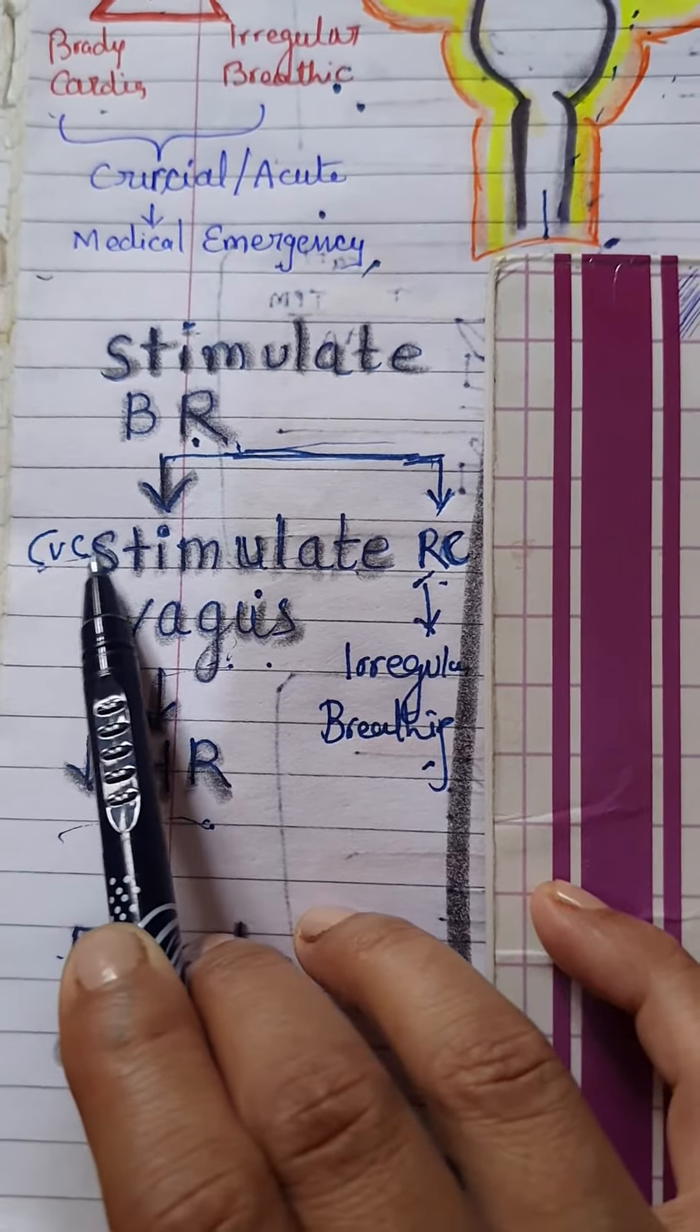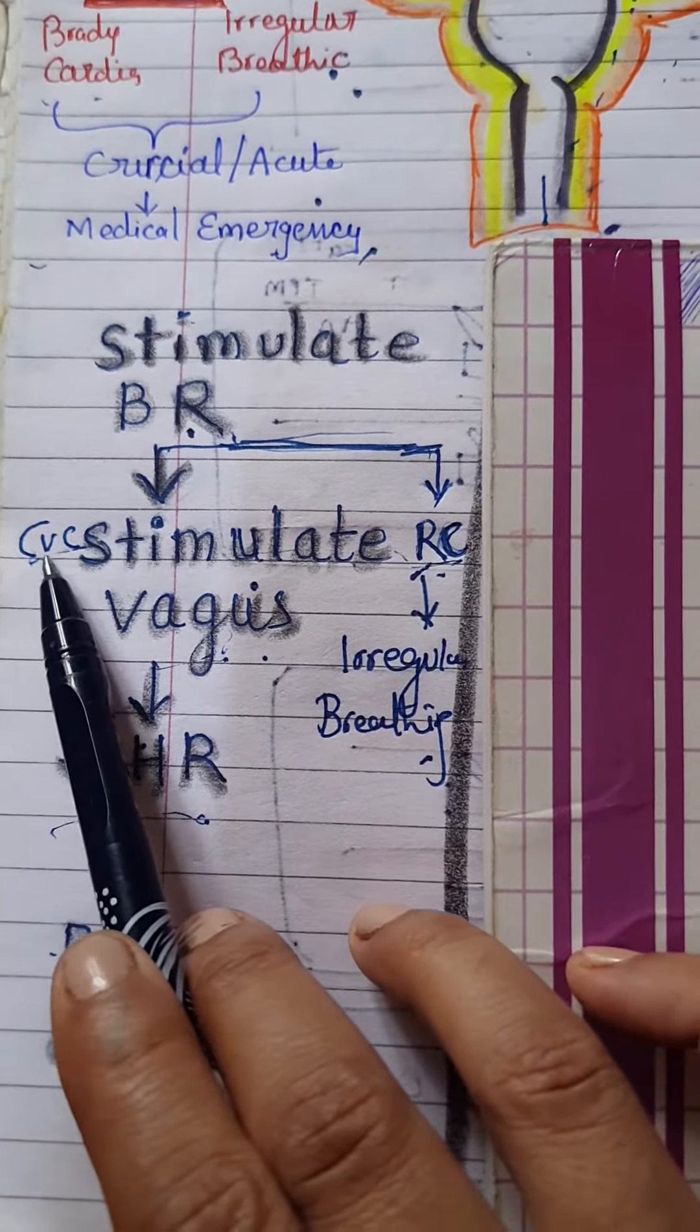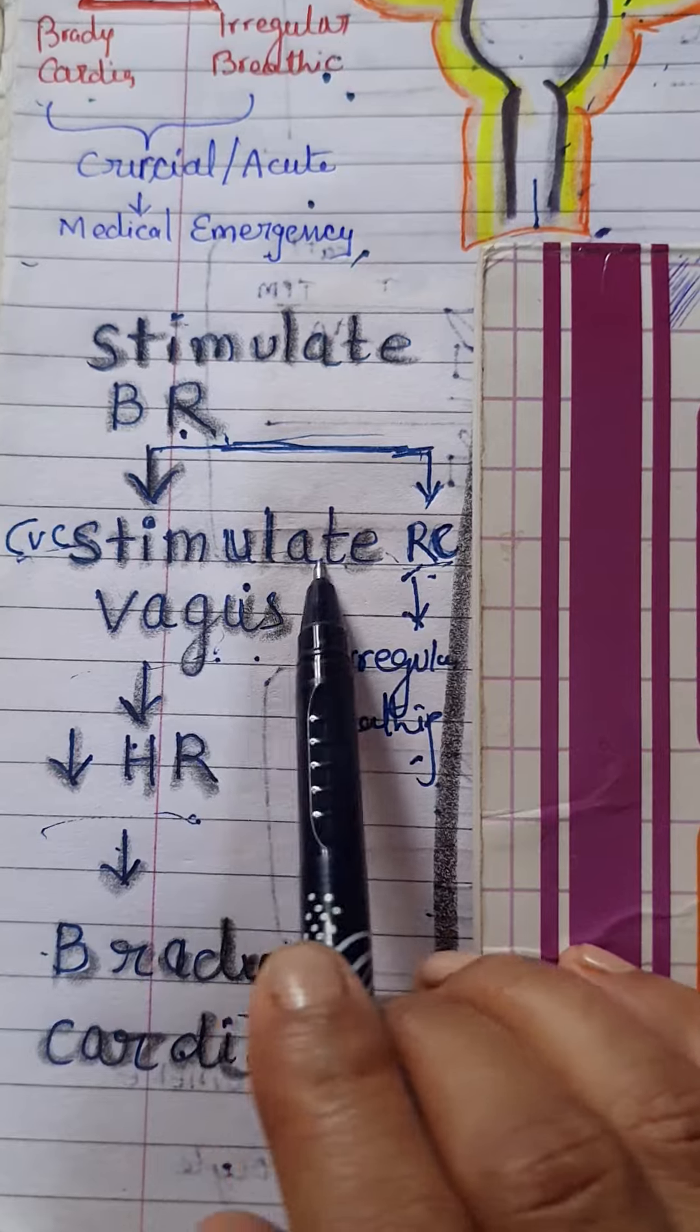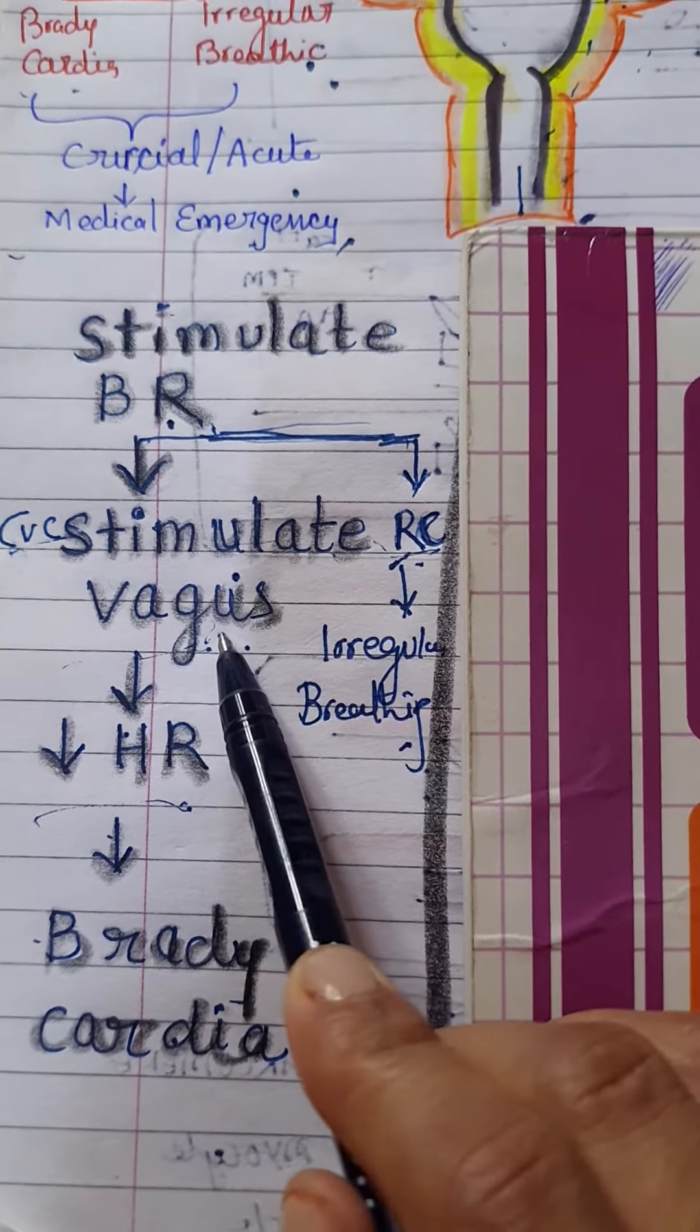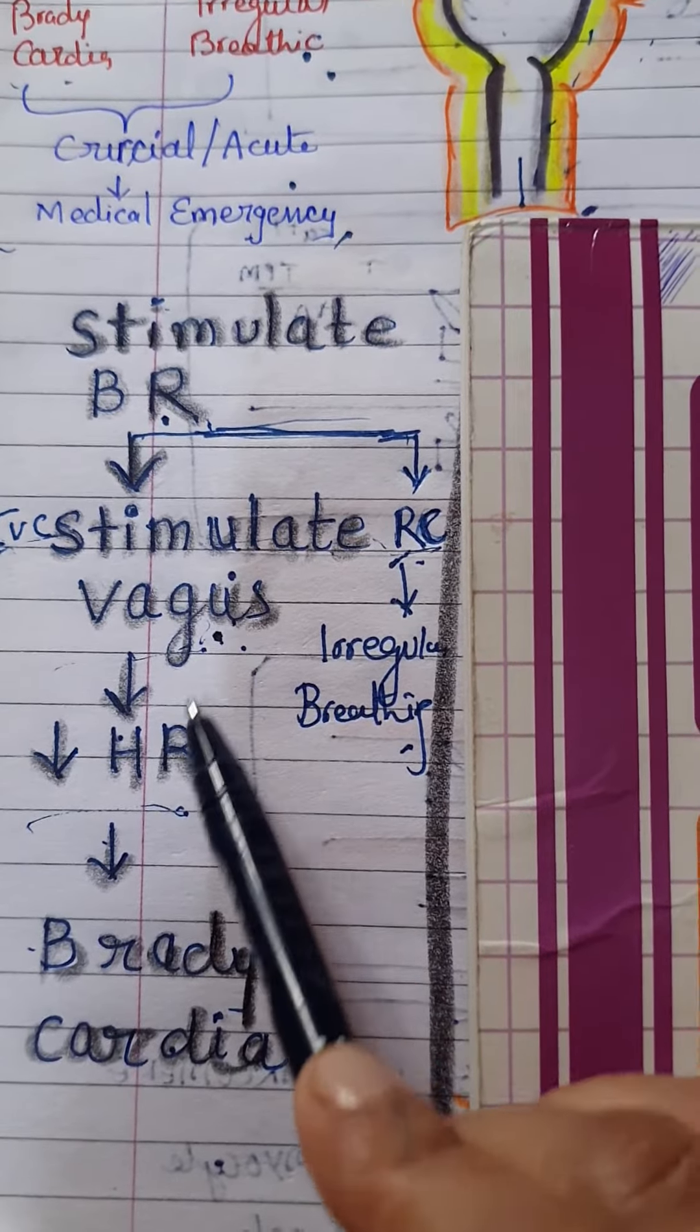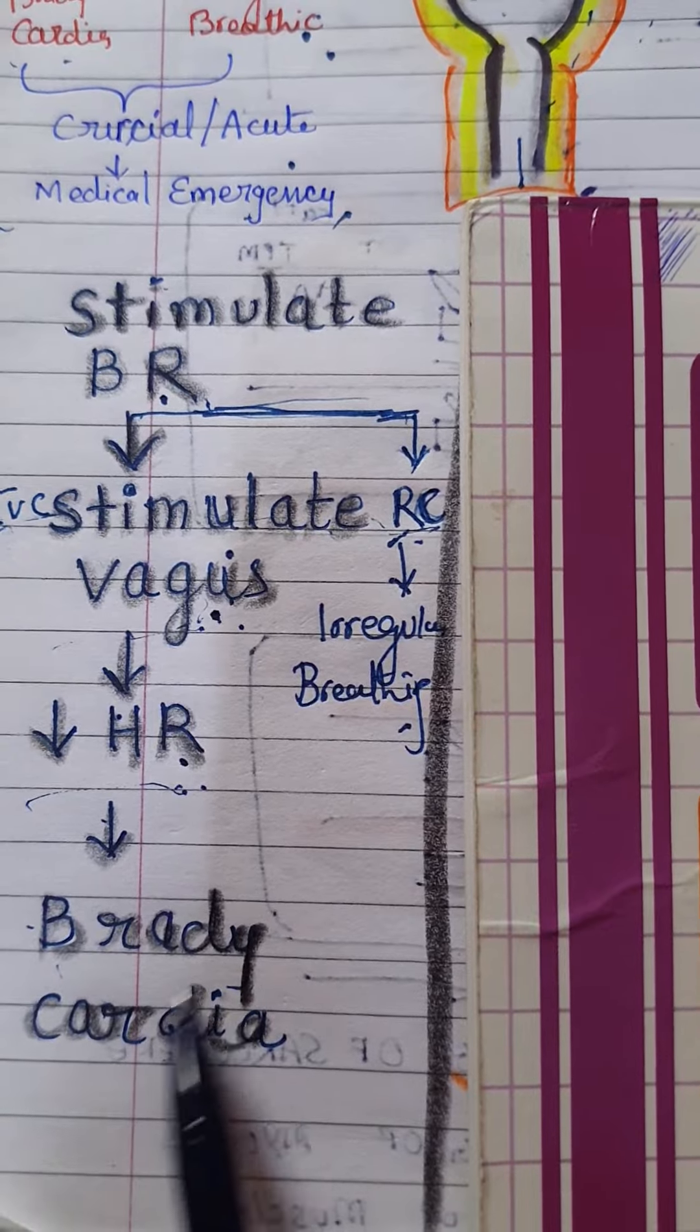That are the cardiac vagal center and respiratory center. When cardiac vagal center stimulates, it causes stimulation of vagus nerve. And vagus nerve, whenever it gets stimulated, then it causes decrease in heart rate or produces bradycardia.